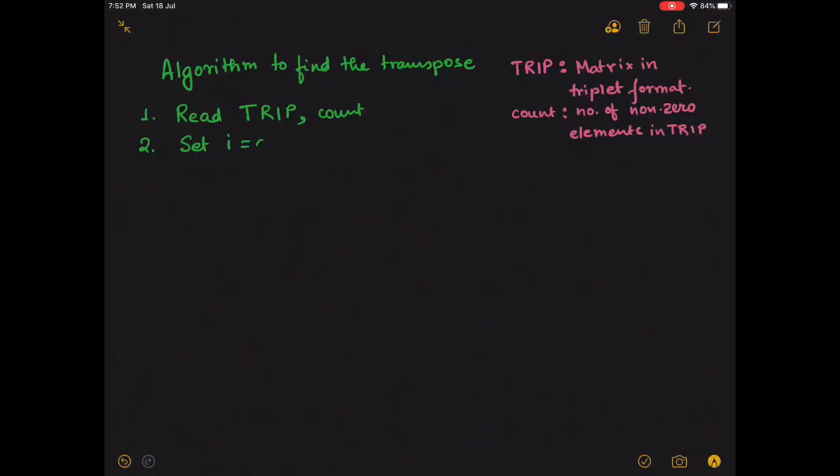Next we set the value of the variable i to 0 and we initiate a for loop where i ranges from 0 to count plus 1. Within the loop we swap the values of TRIP[i][0] and TRIP[i][1].